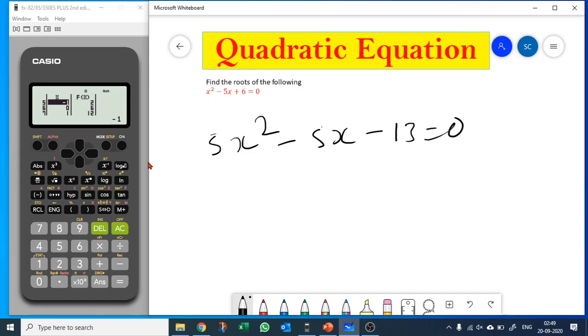Let's try to solve this equation. So what I am going to do, I'll again go to mode and go to the table and type in my function. So 5x squared minus 5x minus 13. Okay, equals to zero.